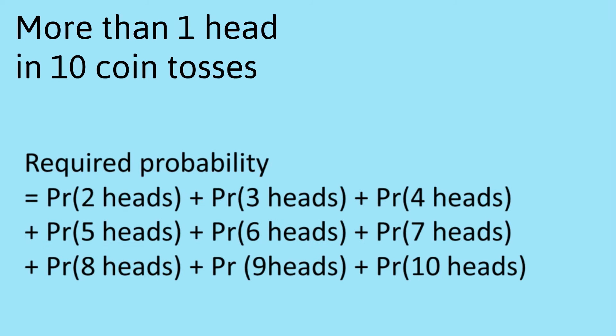Okay, so on to the third question. What's the probability that we get more than one head in ten coin tosses? So if we're going to do this the way we did question two, we just say the required probability is the probability of two heads plus the probability of three heads plus the probability of getting four heads plus all the way up to the probability of ten heads.